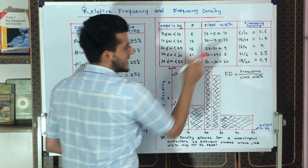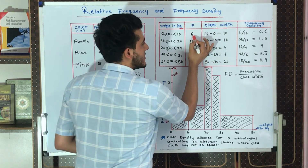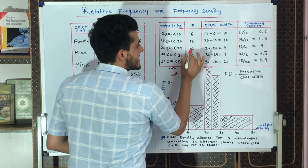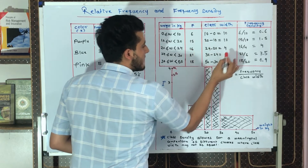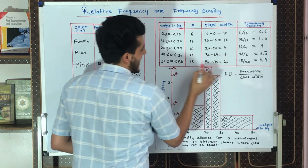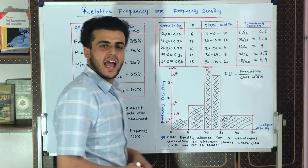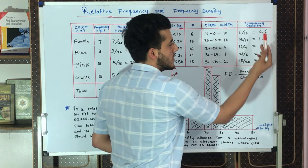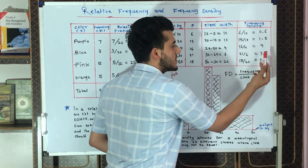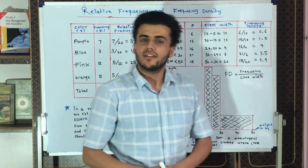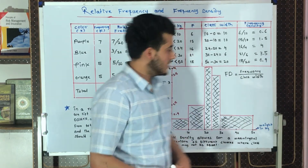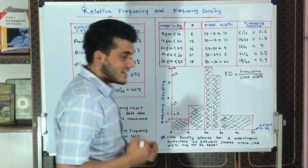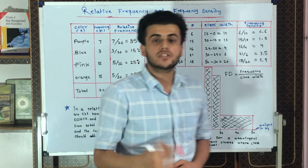We have the frequencies and the class widths, so we calculate: 6 divided by 10, 15 divided by 10, 16 divided by 4, 21 divided by 6, and 18 divided by 20. The results are 0.6, 1.5, 4, 3.5, and 0.9. This is straightforward, but we can illustrate it much better in a histogram.